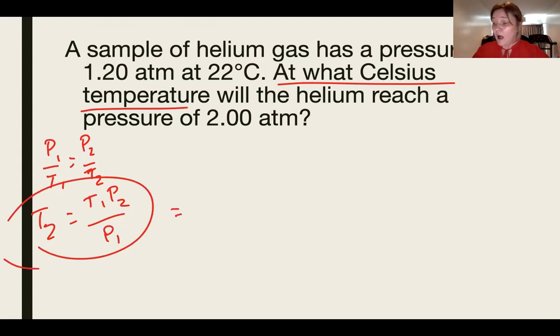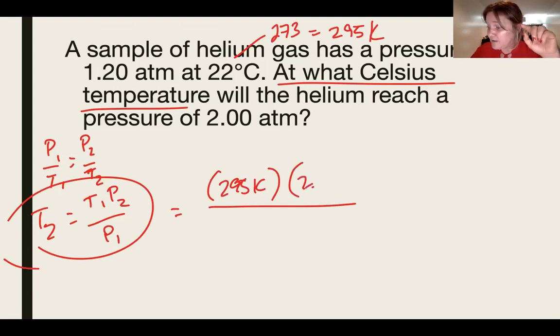Now, I got to change 22 to K. So that is 295. That's T1. P2. Be careful with this as well. The P2 is 2.00 atm. And P1 is 1.20.